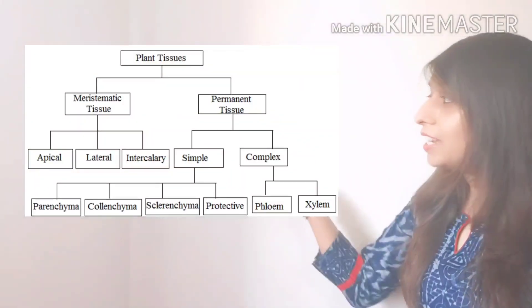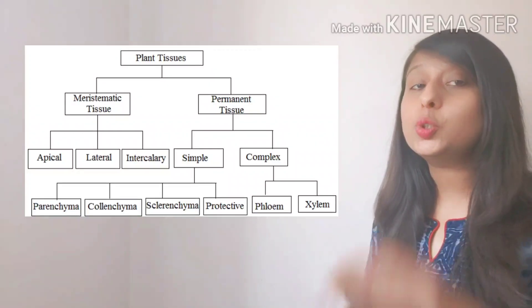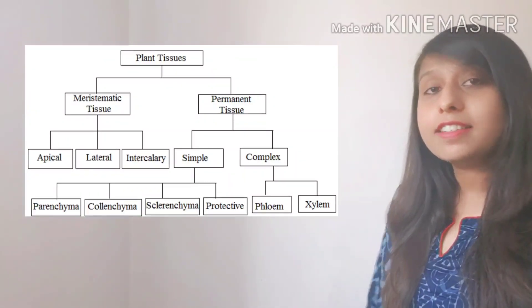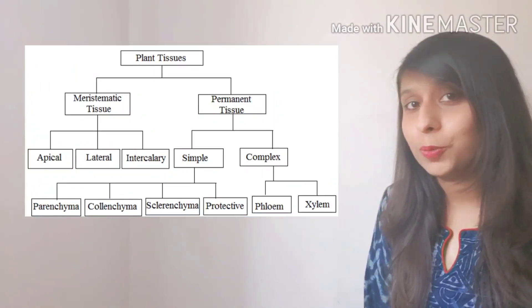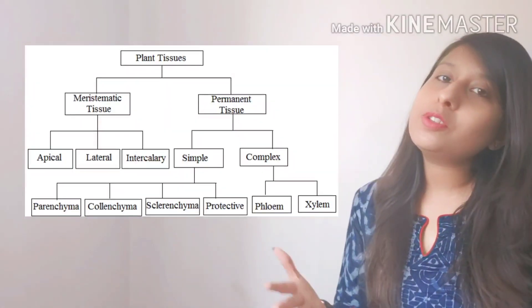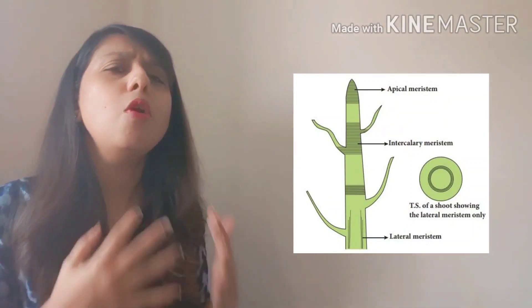Students, firstly we are going to start with the plant tissue. The plant tissue is divided into two: one is the meristematic tissue and the other one is the permanent tissue. So firstly, we are going to start with the meristematic tissue. The meristematic tissue is the most actively found tissue, as the cells of this tissue are dividing rapidly — they are dividing on and on and on.